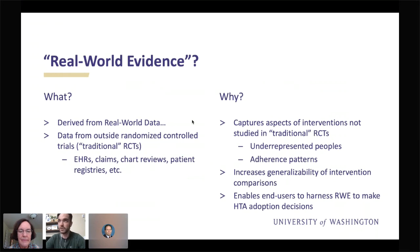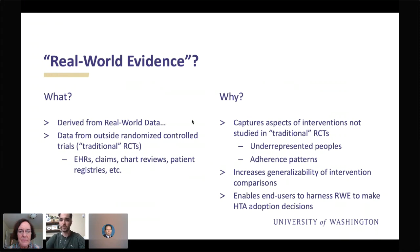Real world evidence helps capture aspects of medications not captured in randomized, heterogeneous controlled trials. Two really big parts of that are underrepresented peoples — we talked about underrepresented populations in medicine today, and real world evidence is one of the tools we can use to combat that. Other things like adherence patterns are hard to capture in randomized controlled trials. It also increases the generalizability of intervention comparisons — drug A may be better than drug B in a randomized controlled setting, but drug B may have aspects in a real world setting more amenable to patient outcomes.